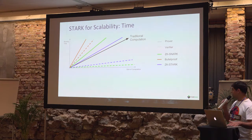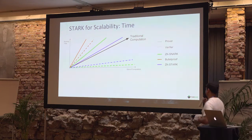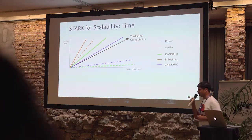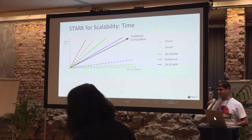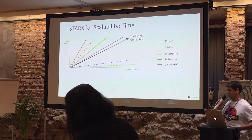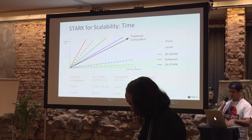With STARK the situation is quite similar to SNARK — the prover is somehow faster, and the verifier is logarithmic with the running time of the computation.